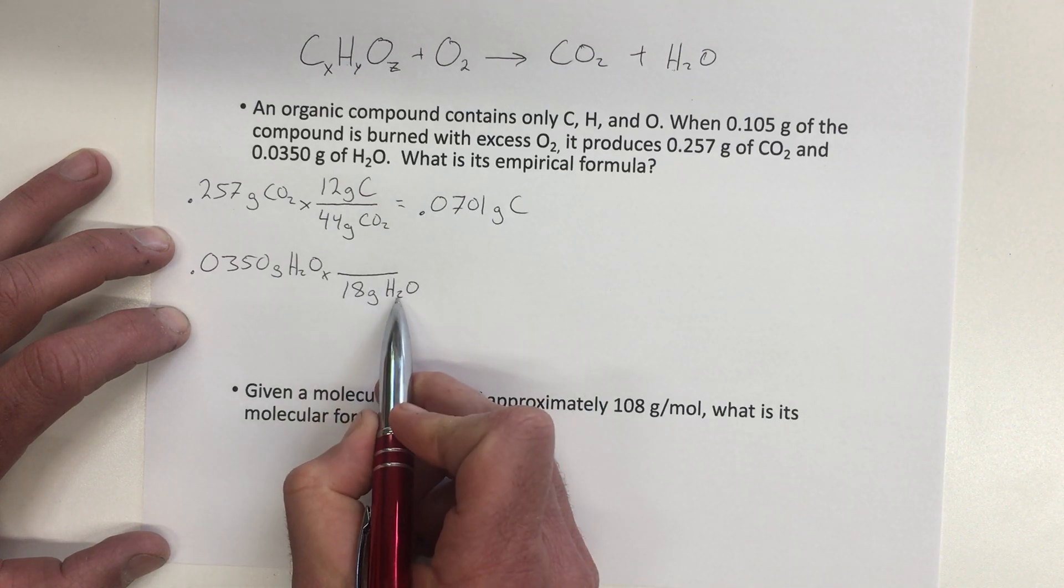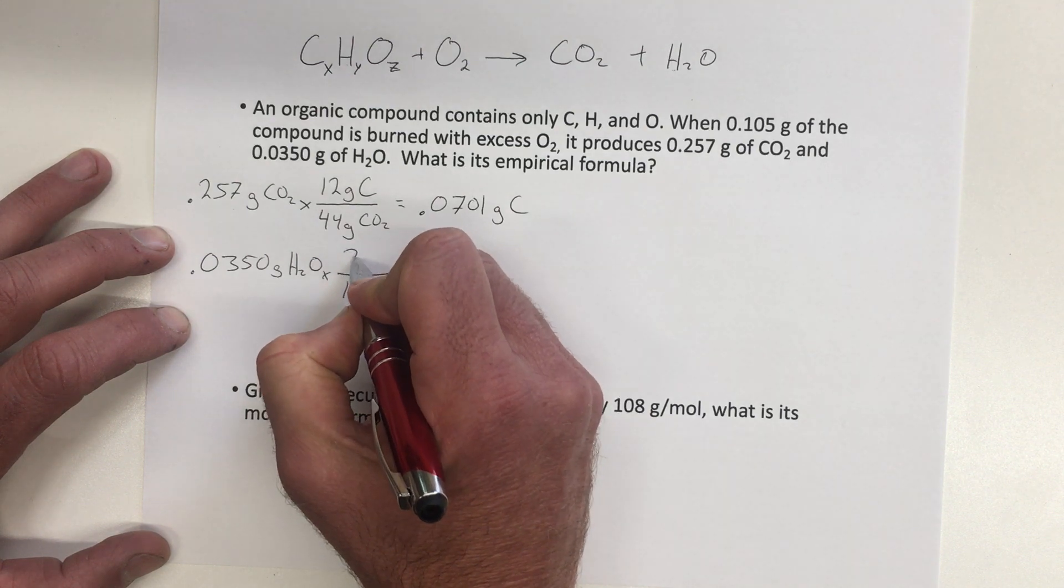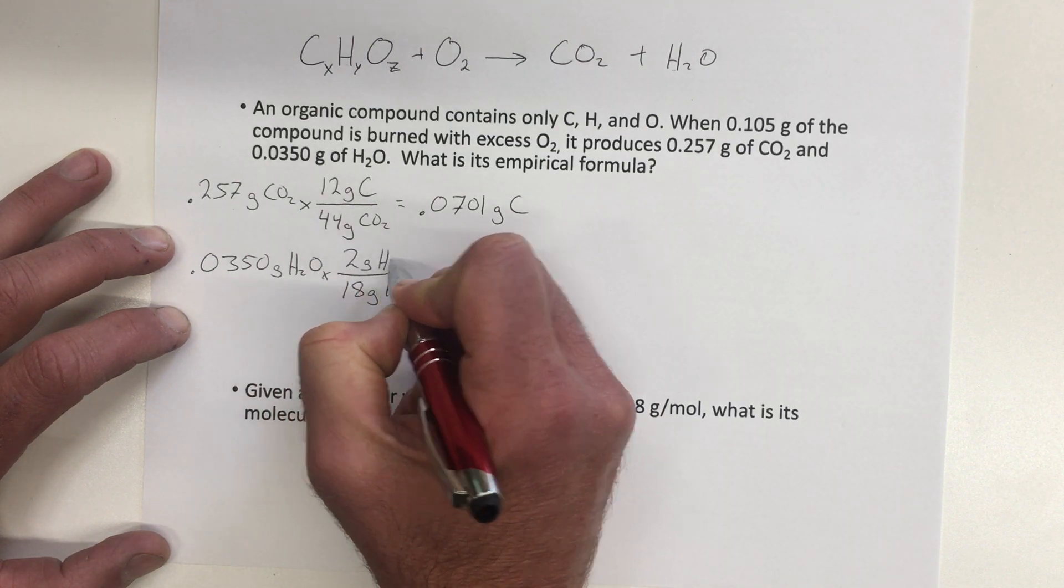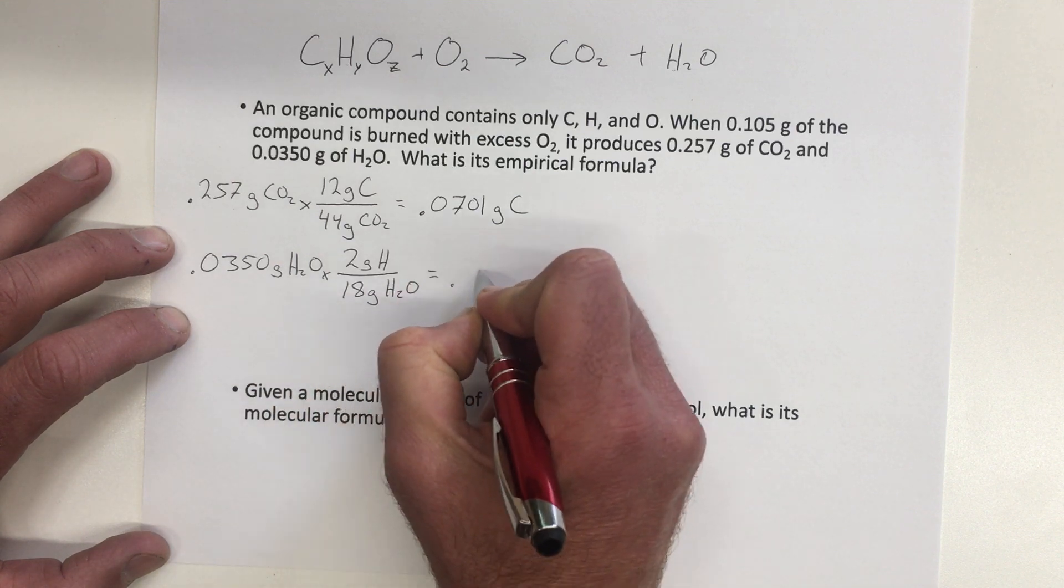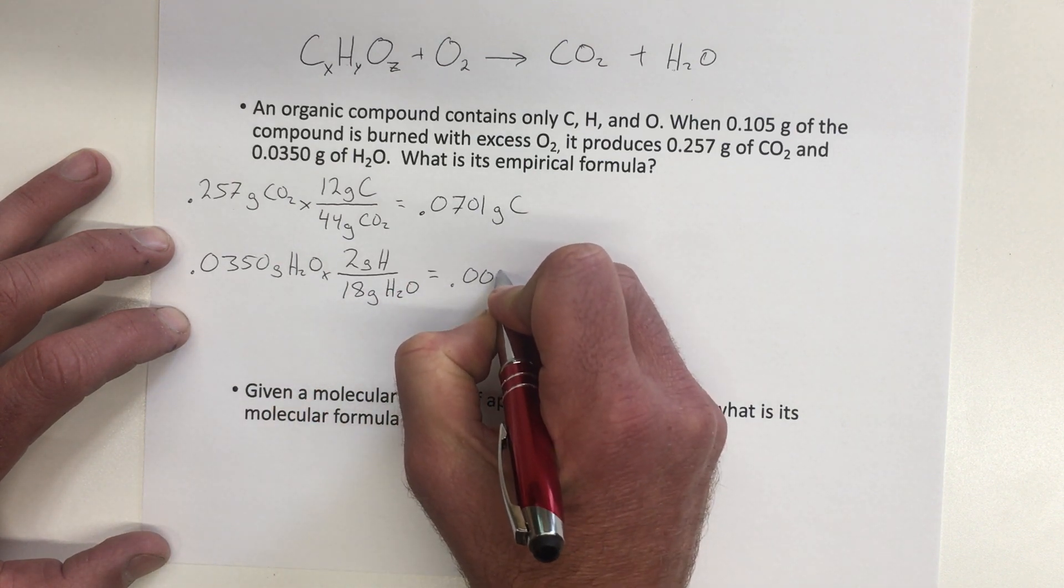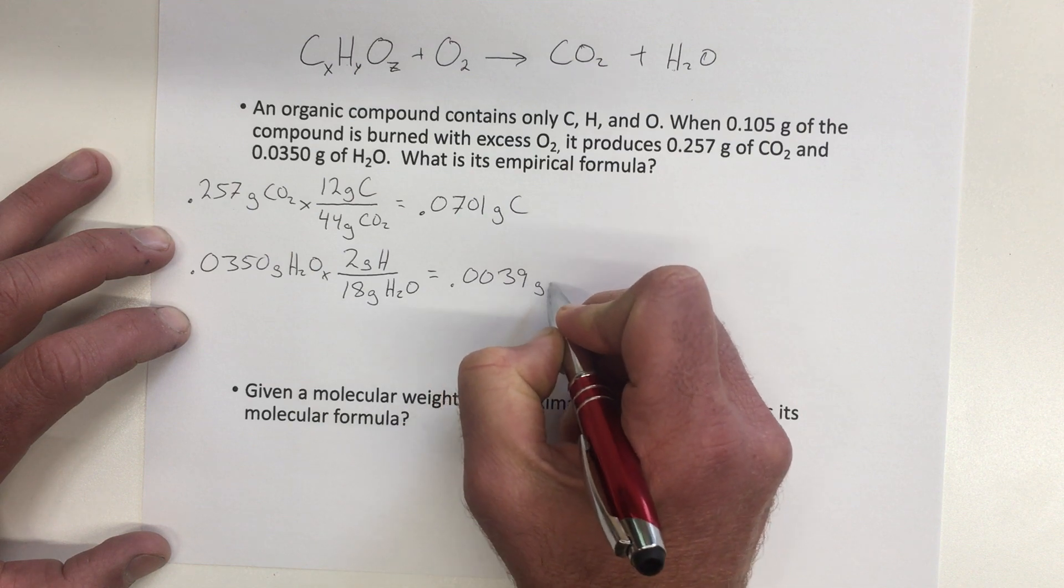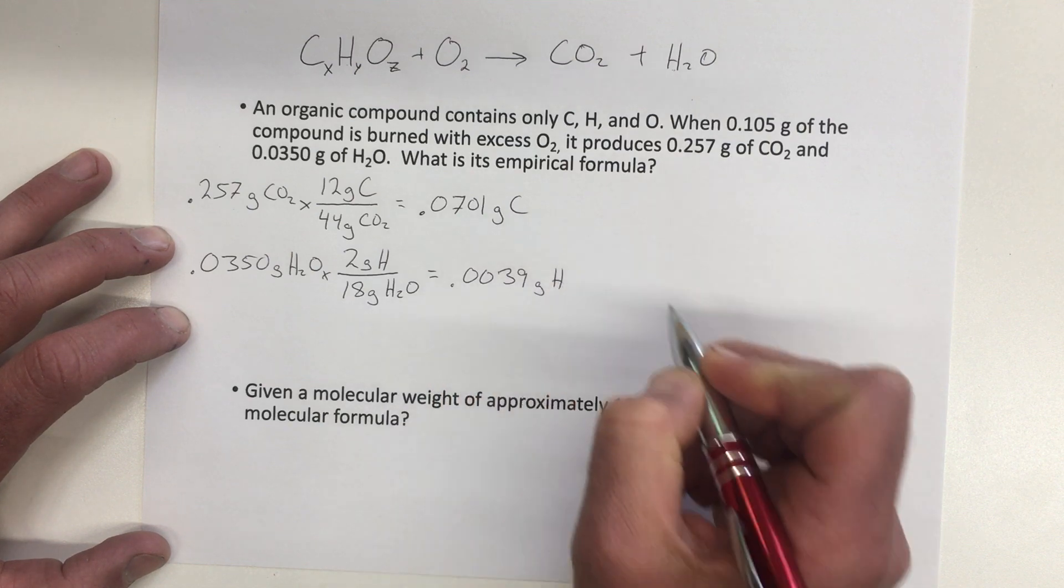And of that mole of water, there's two atoms of hydrogen, each with a mass of one. So we had two grams of hydrogen. And so we multiply that, and you get 0.0039 grams of hydrogen.